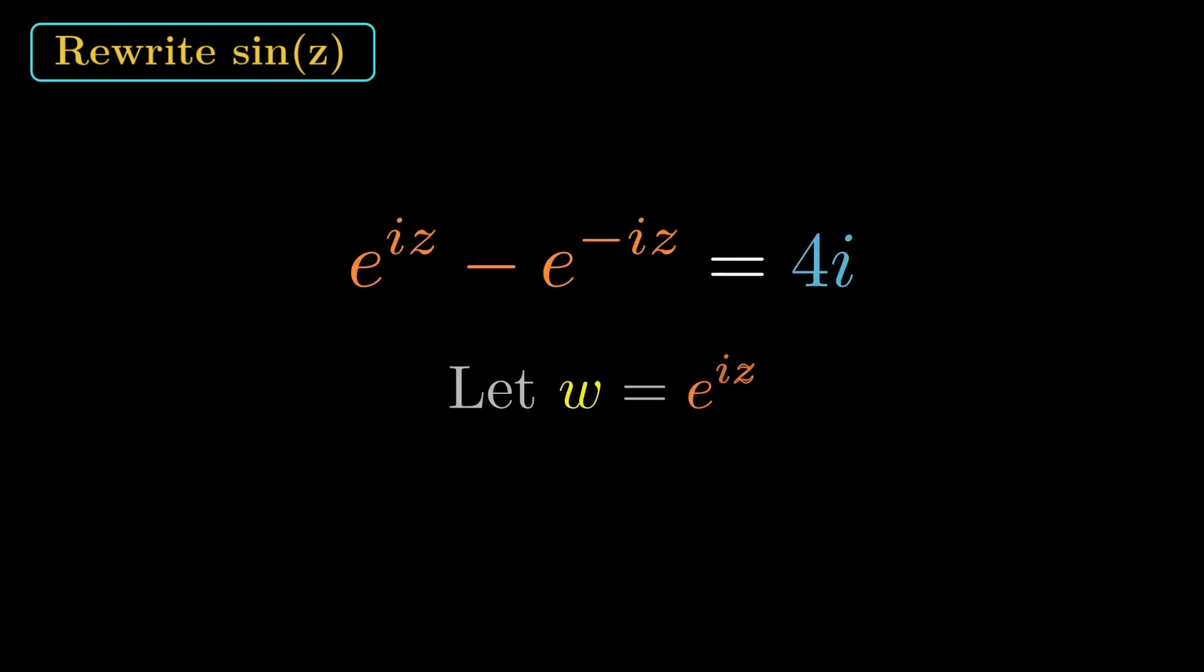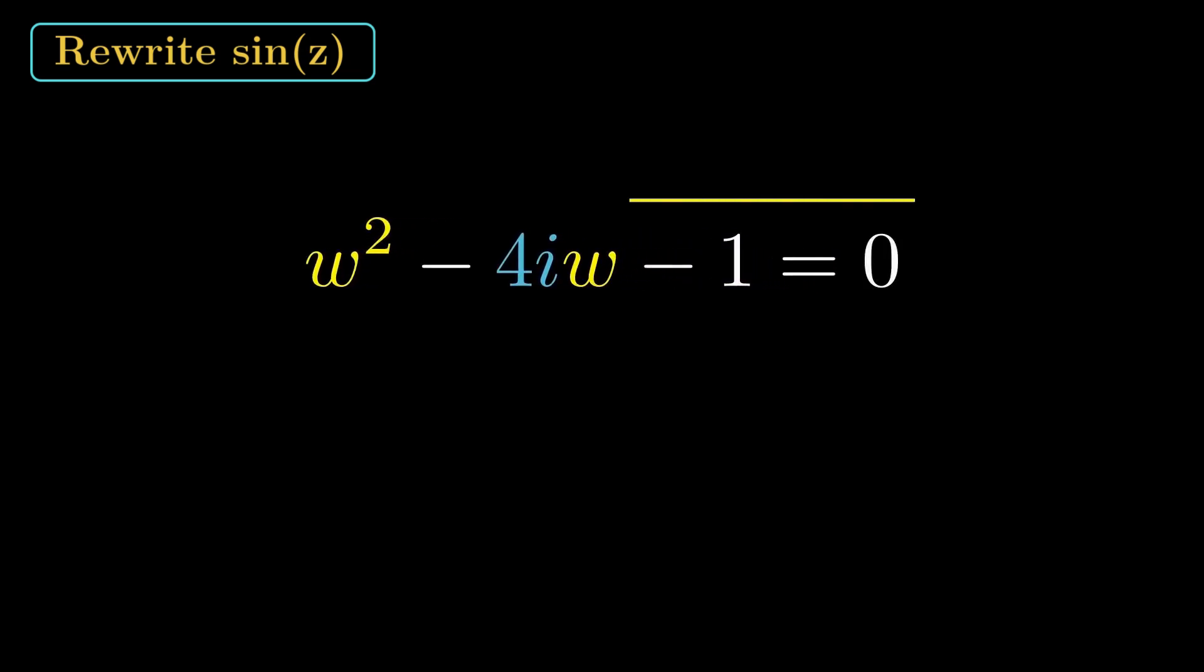Now set w equals e to the iz. So e to the minus iz is 1 over w. That turns the problem into w minus 1 over w equals 4i. Multiply by w and rearrange. w squared minus 4i w minus 1 equals 0. That's the key quadratic.